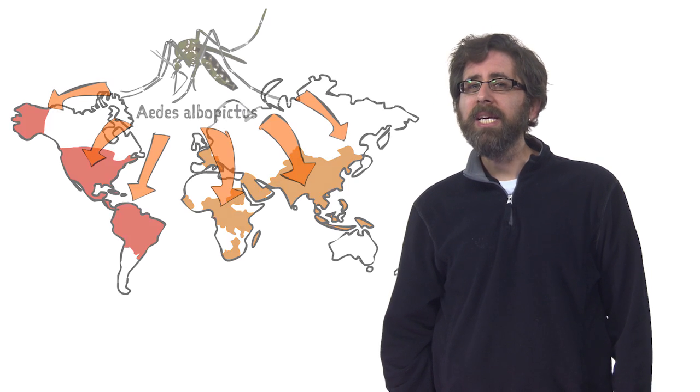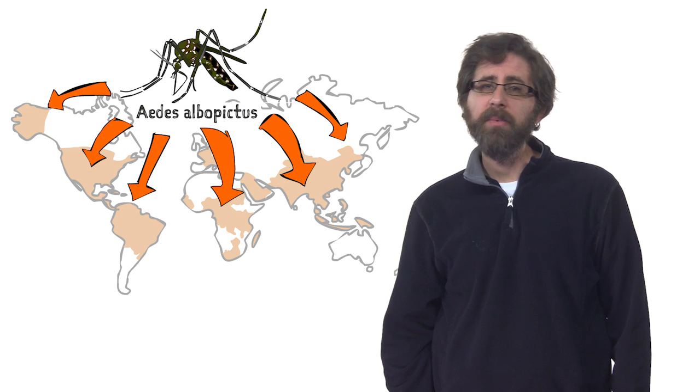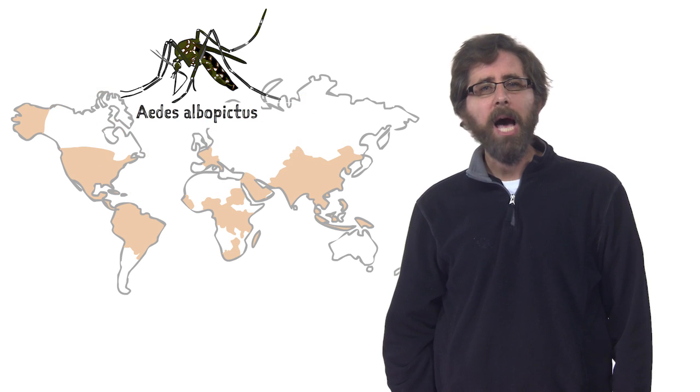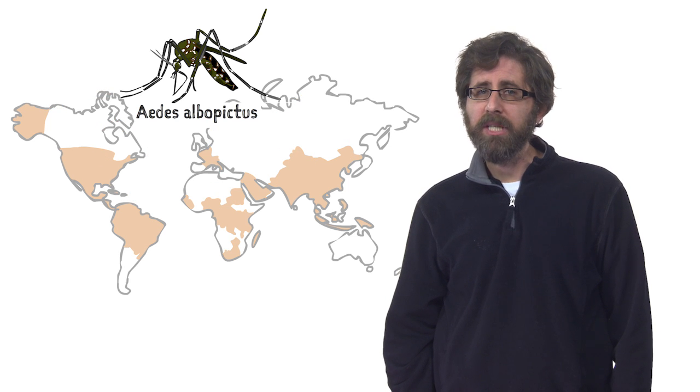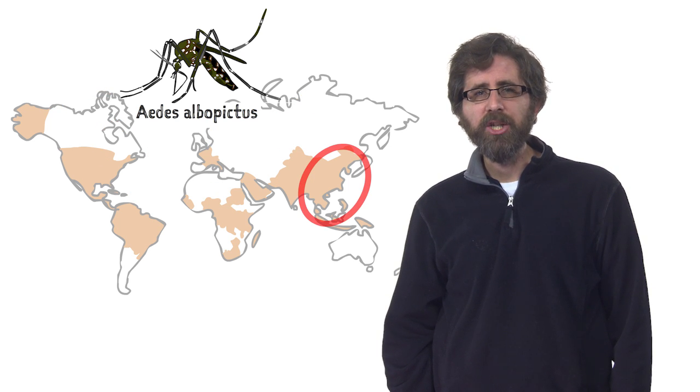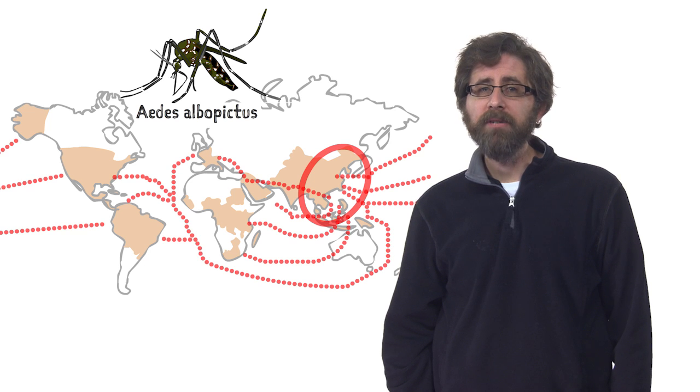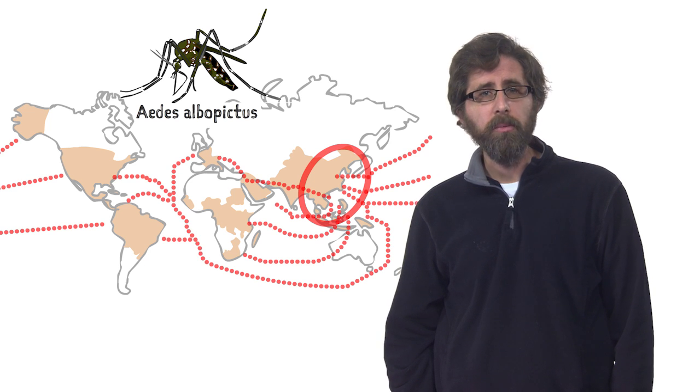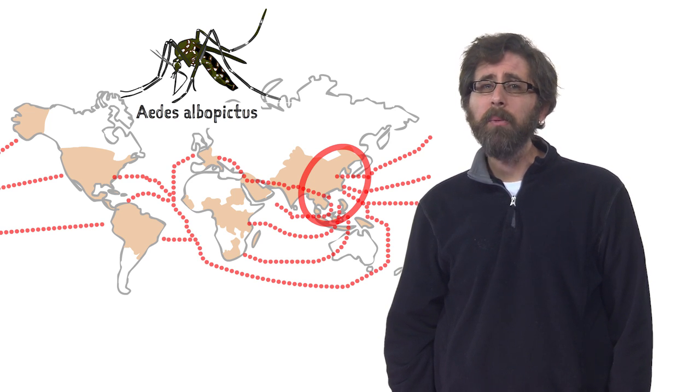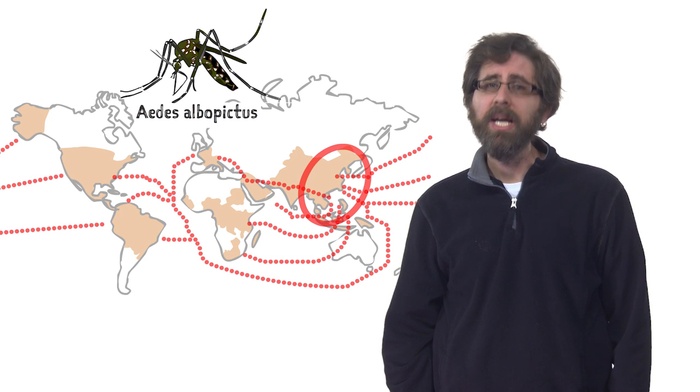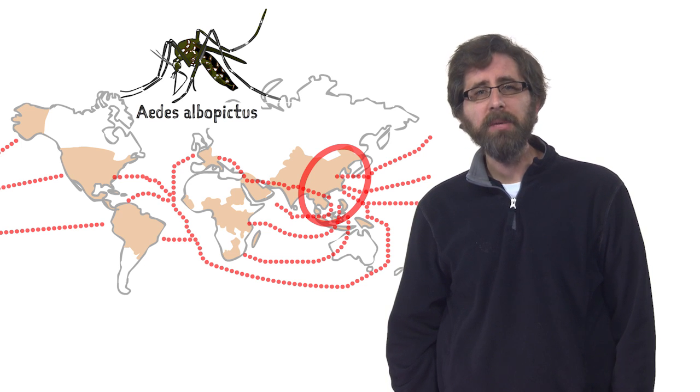One of the explanations for the increasing distribution of Chikungunya is that Aedes albopictus has itself been spreading across the globe. Albopictus, or the Asian tiger mosquito, is native to Southeast Asia but has been transported, often in shipments of goods, across the globe. Once in a new place, Albopictus is very good at establishing and often out-competing native species of mosquitoes.